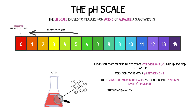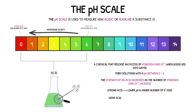The strongest acids will have a pH of 0 and will release large numbers of hydrogen ions when dissolved into water, whereas the weakest acids will have a pH of 6 and release small numbers of hydrogen ions when dissolved into water.